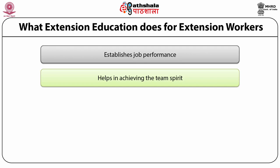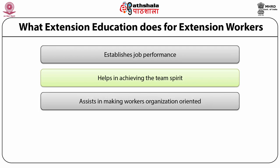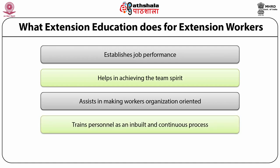The third intervention is that extension assists in making extension workers organization-oriented. Binding the personnel to the task to be accomplished is the primary task of the extension organization. Once personnel become organization-oriented, rest of the things are taken care of automatically. The fourth intervention is that extension trains personnel as an inbuilt and continuous process. Training is an inbuilt process of extension activities. There are different types of trainings — pre-service training, induction training, in-service training, etc. — and depending on the need, the type of training will be administered.